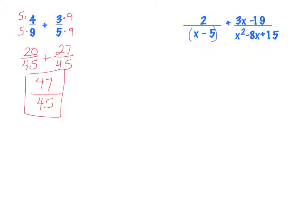The x minus 5 is its own thing. Looking at the other denominator — maybe a GCF, but 19 is prime, so nothing comes out. The last denominator is a quadratic, so I'm going to factor it. What I'm hoping is to get something that matches the x minus 5 over here — and I am lucky enough: it factors as x minus 5 and x minus 3.